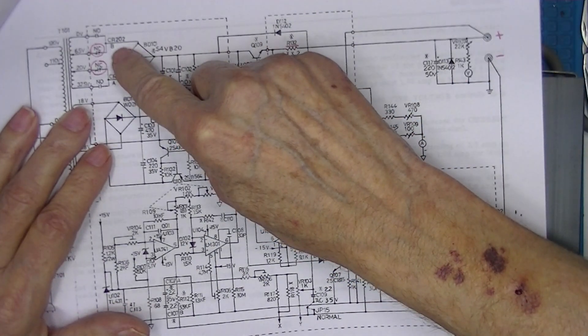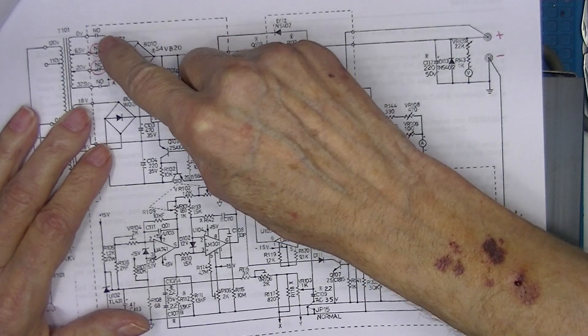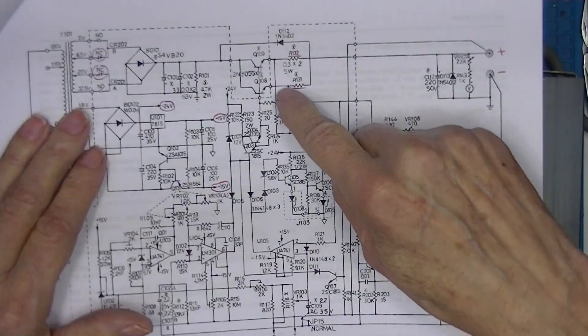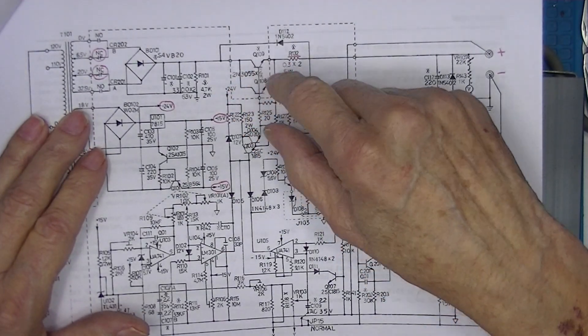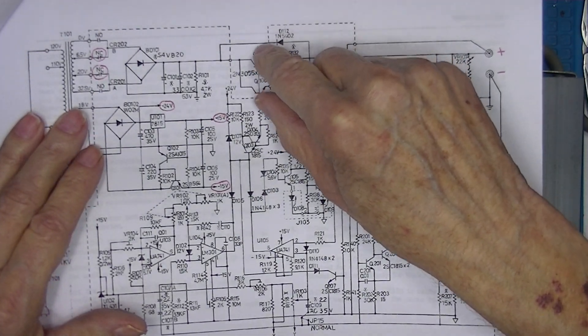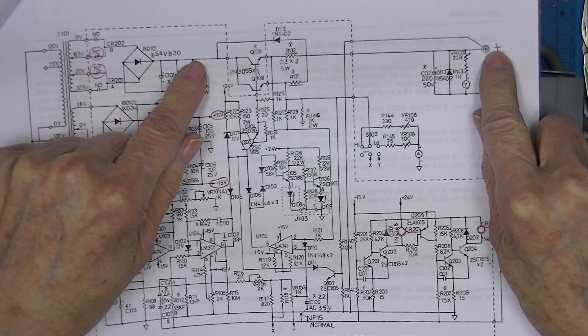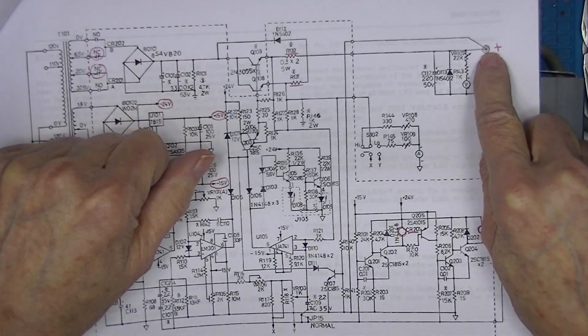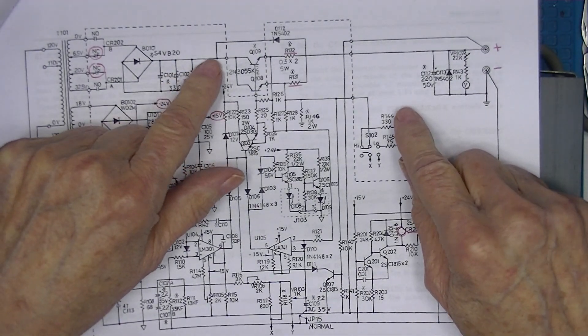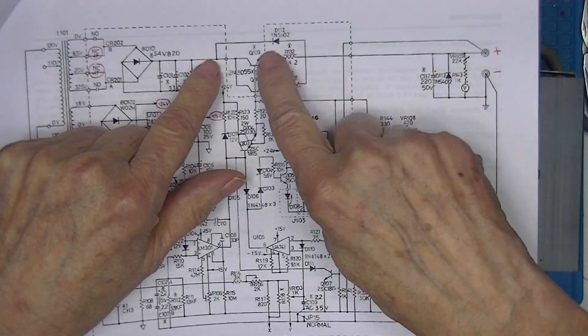This transformer is tapped - one end is called zero, then it's tapped at six and a half, twenty, and thirty-two and a half volts. The pass transistors and the heat sink they're placed on has to dissipate the difference in voltage between here and here. Worst case is this voltage here is zero, so whatever this voltage is times three amps is the amount of heat that's dissipated here.